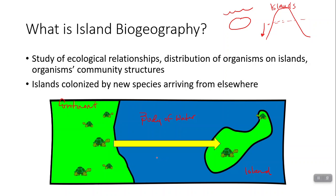Similar things happen with plants. For example, coconuts are really good at floating, and that is because they're adapted to float from one island to another, from mainland to an island. That way, the coconuts can spread to larger areas and keep their population in existence. Plants spread easily, especially if they can float or if their seeds are carried on the wind. Anything that can swim can make it to an island. Birds can fly to islands. Those tend to be the ways that organisms get out there.